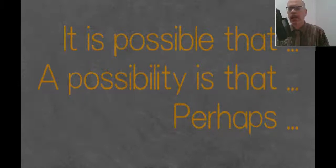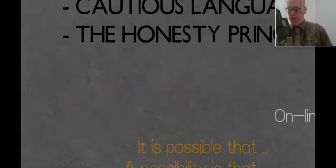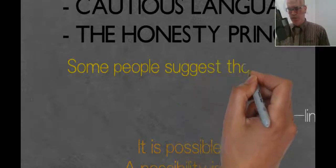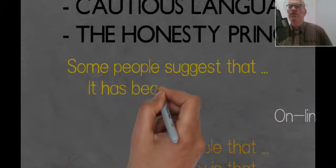The next one, a possibility is that. So now we have the word changing to a noun. So we're going to show off sometimes and change our language. Or just the easy one is perhaps. So some other language that we could use at the start to make our sentence more cautious would be these two options.